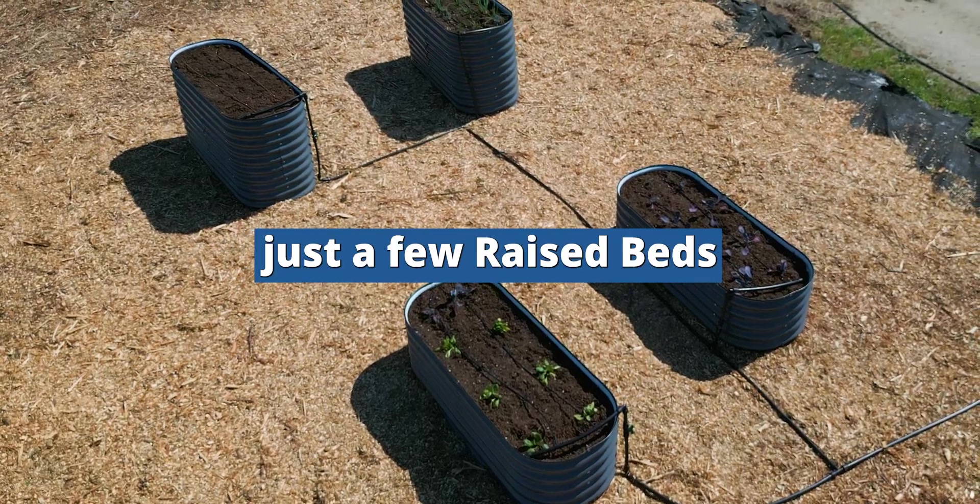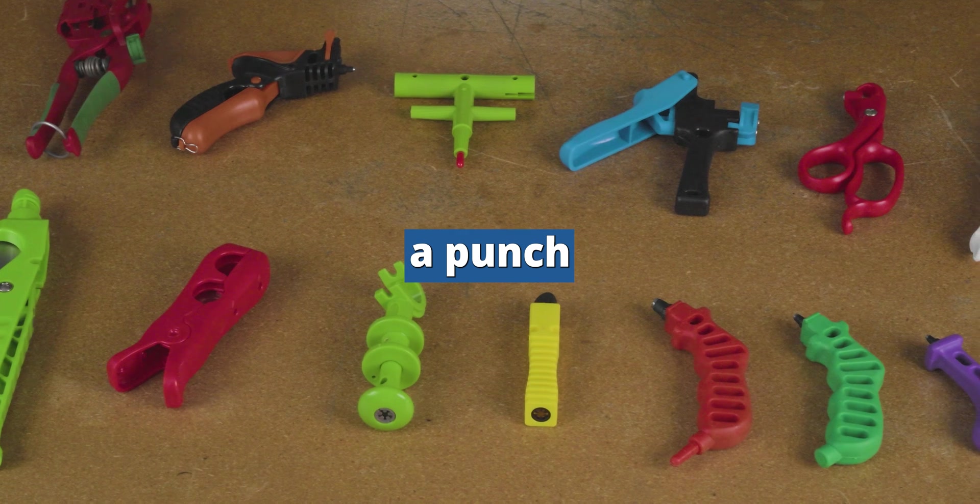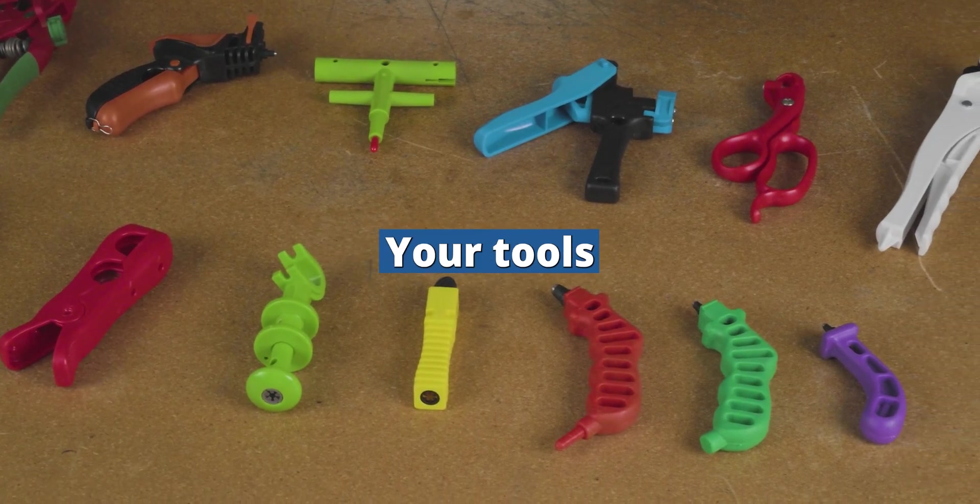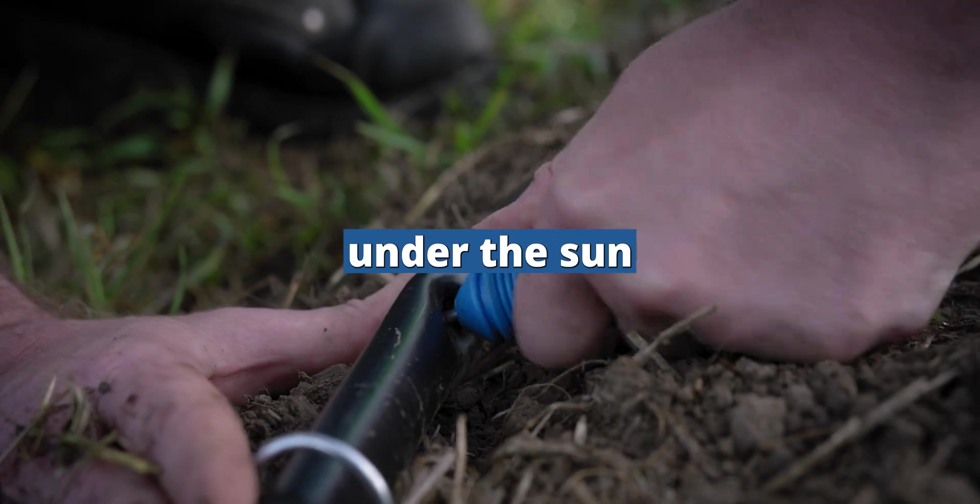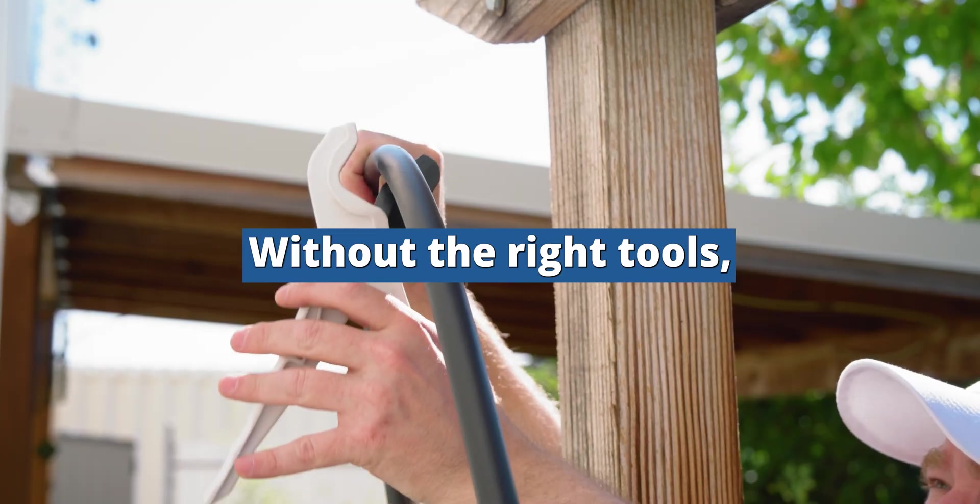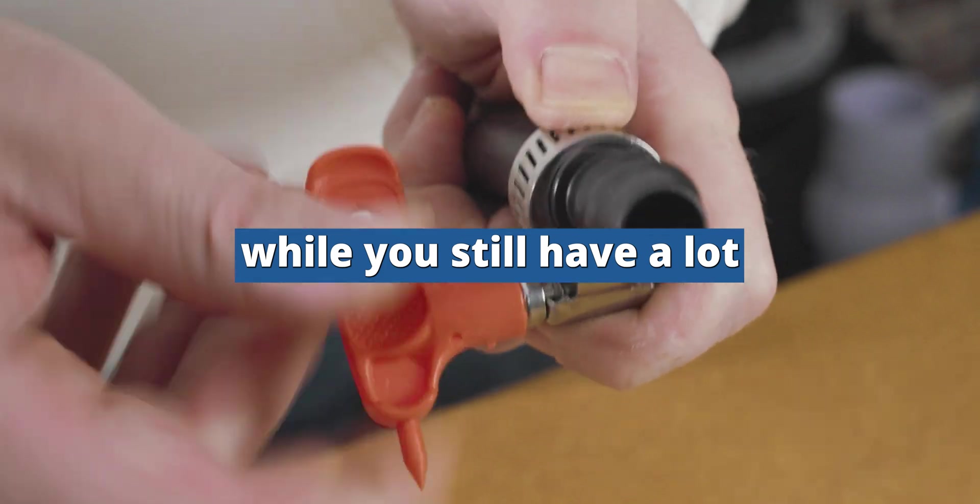Whether you're irrigating just a few raised beds or a large elaborate landscape, chances are you're going to need a punch to install your emitters and fittings. Your tools are incredibly important, particularly while installing under the sun and in the dirt. Without the right tools, fatigue can set in fast, and if you have a large project, this can happen while you still have a lot of work to do.